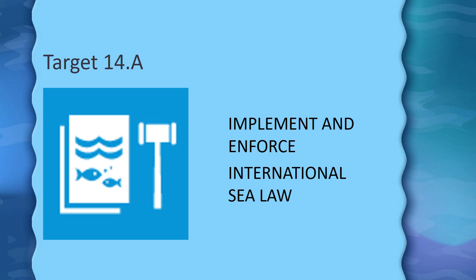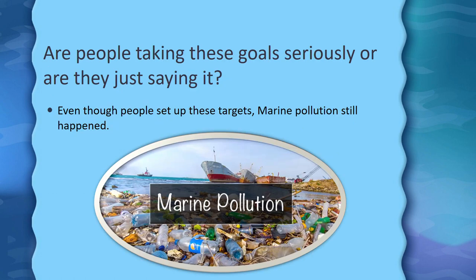Now, are people taking these goals seriously, or are they just saying it? Several targets had a deadline of 2020. If people had taken those goals seriously, marine pollution would probably have been greatly reduced by now. But marine pollution still happens, and nothing has really changed. The government set up these targets but did not take them seriously. Even though the targets were established, marine pollution continues because of human activities.